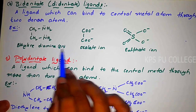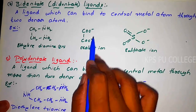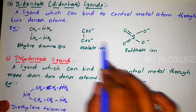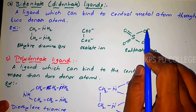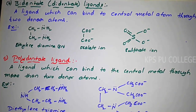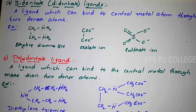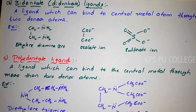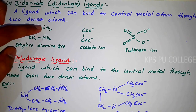Same as that, oxalate ion has two donor atoms: O- and O-. Sulfate ion also has O- and O-, so this is also a bidentate ligand. These ligands have the ability to link with the central metal atom at two different positions.